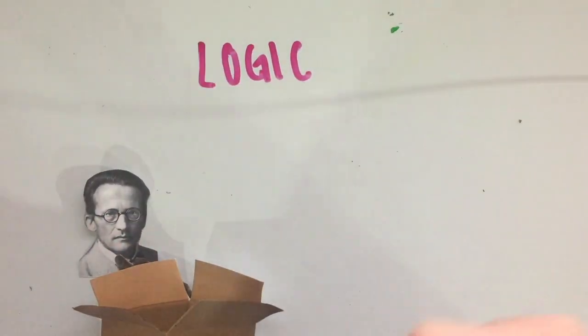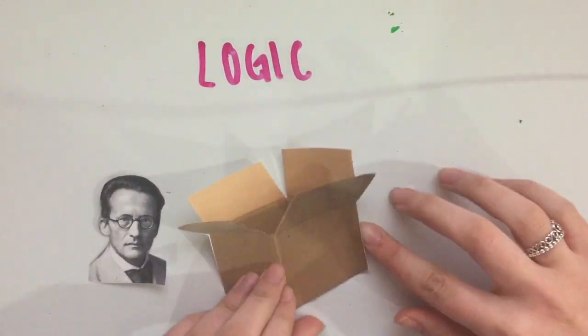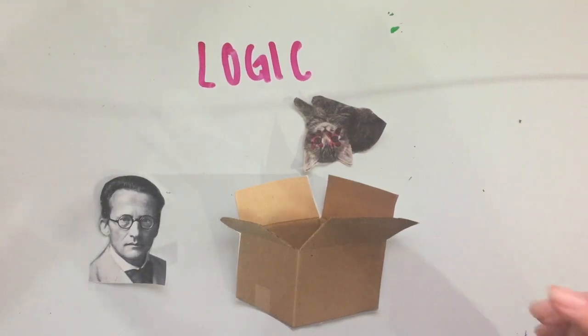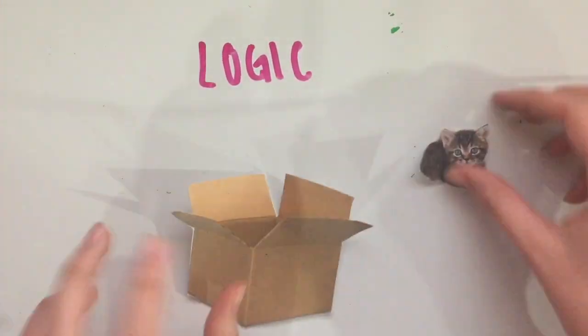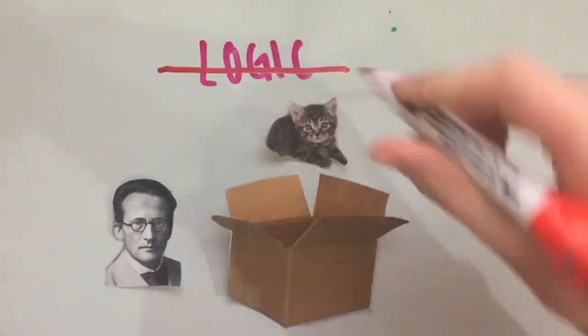Logic tells us that when we open the box, if the cat is dead, it has been dead in the box for a certain amount of time before we opened it and was like that when we found it. Or, that the cat is alive and has stayed alive since we put it in the box and we just found it that way upon opening it.